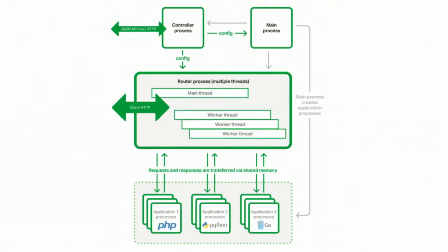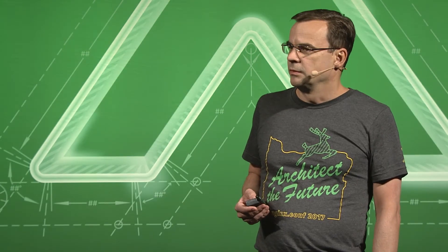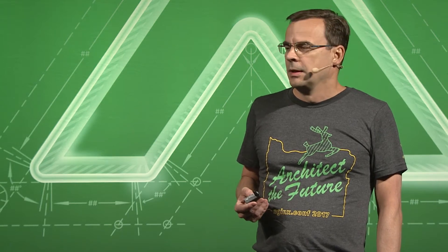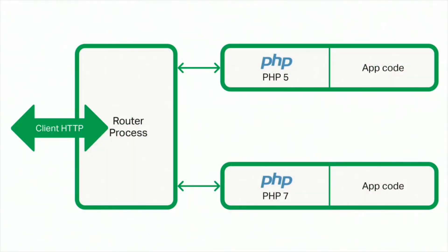When the router receives requests for applications that have not been started yet, it asks the main process to start the application. Currently, applications start only on demand, and later we will add prefork capabilities. When the main process needs to start an application, it forks a new process, dynamically loads the required application module, and sets appropriate credentials for the new process.